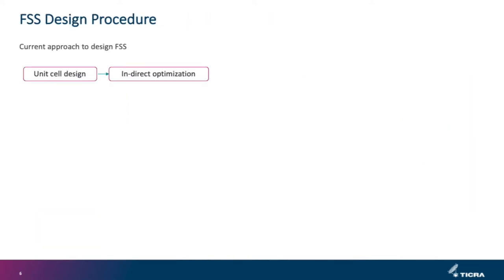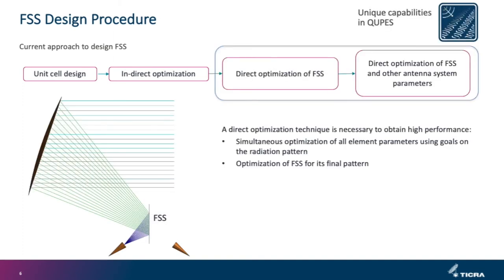For FSS design, the commonly adopted approach is to design the FSS at the unit cell level. For periodic FSS, this is the only step needed. But for a modulated FSS, indirect optimization needs to be carried out, meaning that the FSS elements are often designed to fulfill certain intermediate goals, for instance to match a certain amplitude or phase for a certain incidence angle. With Qubes, we carry out a direct optimization of the FSS, meaning we optimize all FSS elements simultaneously to directly fulfill goals on the radiation pattern. This is often specified on the final radiation pattern of the entire antenna system — we are not optimizing the FSS for its radiation onto the main reflector, but rather the radiation pattern from the main reflector. This is necessary to obtain high performance, particularly when optimization is performed over a wide frequency range.